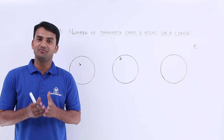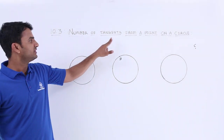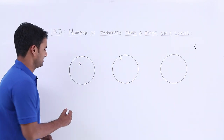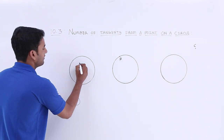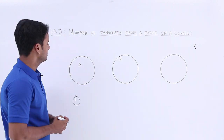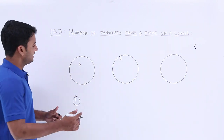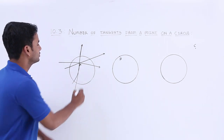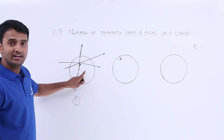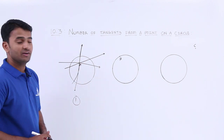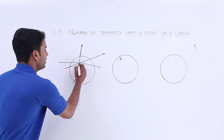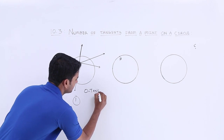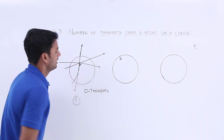In this video we are going to discuss the number of tangents from a point on a circle. Here, three cases are given. Case 1: we have a point A within the circle. Here I have drawn three lines through this point, and each line has two points of contact. This means we cannot draw any tangent through a point inside the circle — zero tangents.